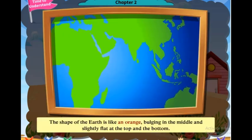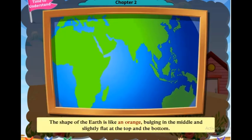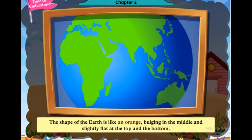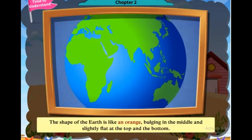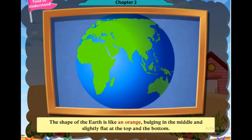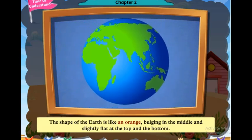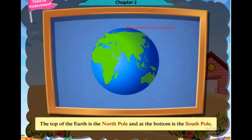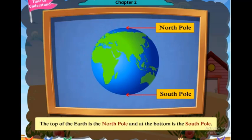The shape of the earth is like an orange, bulging in the middle and slightly flat at the top and the bottom. The top of the earth is the north pole and at the bottom is the south pole.